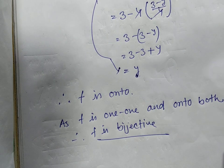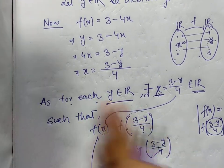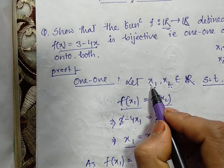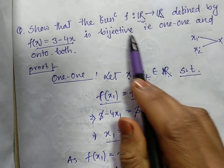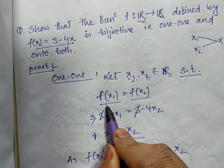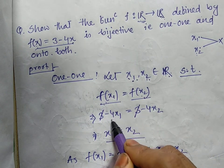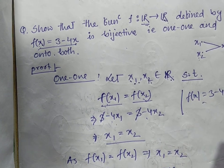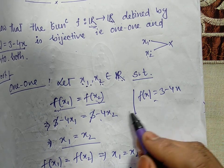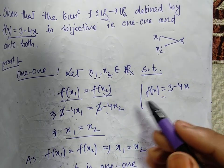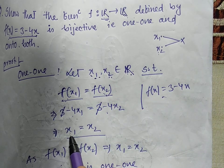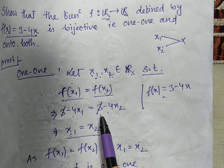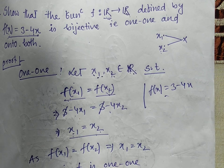So let us recall all those concepts. First, how we checked one-one: the steps are fixed. We considered two elements from the first set - real numbers. We considered two elements with equal images: f(x₁) = f(x₂). Since f(x) = 3 - 4x, we used this. We wrote f(x₁) and f(x₂). After simplifying, we got x₁ = x₂. So images equal means elements equal. According to the definition of one-one function, the function is one-one.